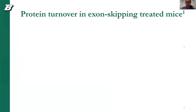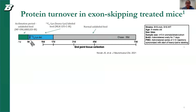I will first go over the pulse-chase example and previously published results, where we looked at protein turnover in exon-skipping treated mice. In this experimental model, we had wild-type and MDX mice. They initially went through an acclimation period, given unlabeled feed provided by Cambridge Isotope. They were then given heavy-labeled feed over a 15-day period. Following that, they were given normal feed, which was our chase period.